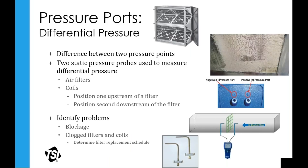Another thing you can do is measure differential pressure — basically the difference between two pressure points. It's very common to measure pressure drops across reheat coils, heating and cooling coils, and filter banks. As a filter builds up dust and debris, it creates more resistance — a higher pressure drop — which restricts airflow through the ductwork. Many commercial facilities have dedicated differential pressure transducers mounted across filters that indicate at a predetermined set point when a filter needs to be changed.